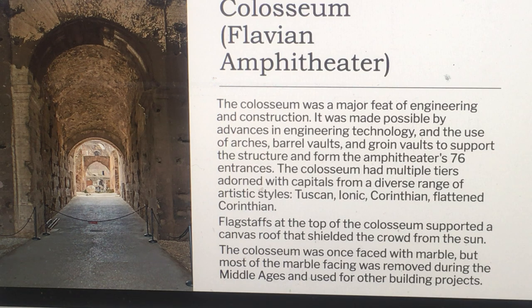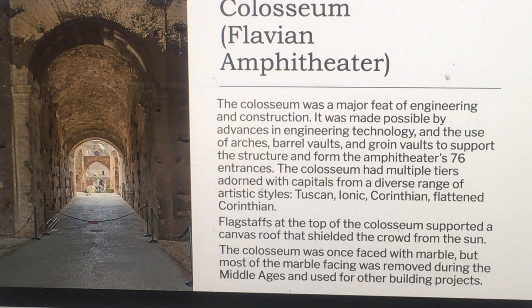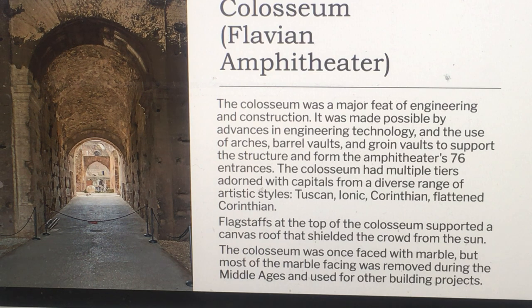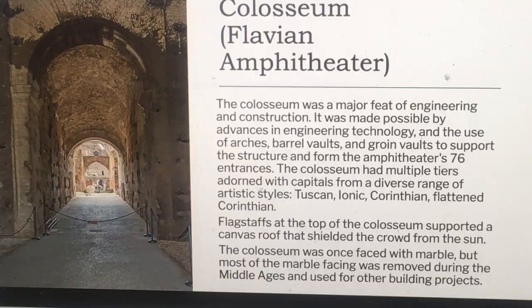The Colosseum had multiple tiers adorned with capitals from a diverse range of artistic styles: Tuscan, Ionic, Corinthian, and flattened Corinthian. Flagstaffs at the top supported a canvas roof that shielded the crowd from the sun. The Colosseum was once faced with marble, but most of the marble facing was removed during the Middle Ages and used for other building projects.